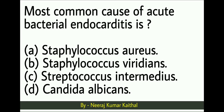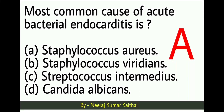Last question: The most common cause of acute bacterial endocarditis is — option A: Staphylococcus aureus, option B: Staphylococcus viridians, option C: Streptococcus intermedius, option D: Candida albicans. The right answer is option A: Staphylococcus aureus. Staphylococcus aureus is the most common cause of acute bacterial endocarditis.